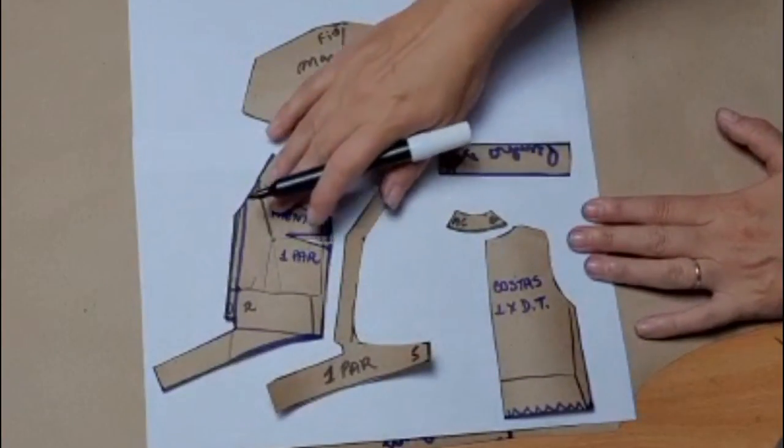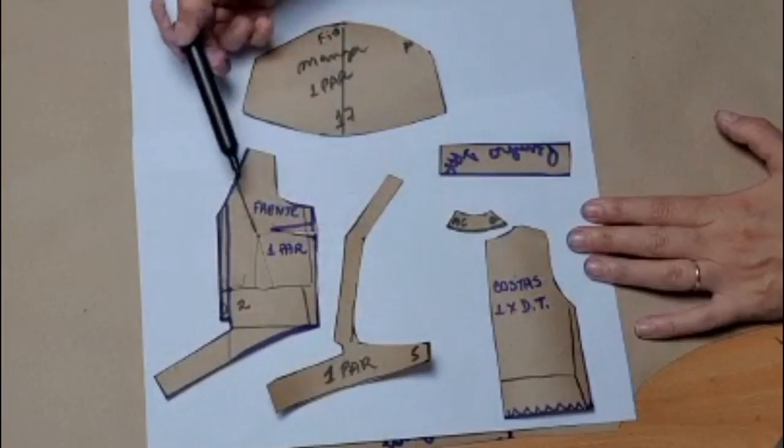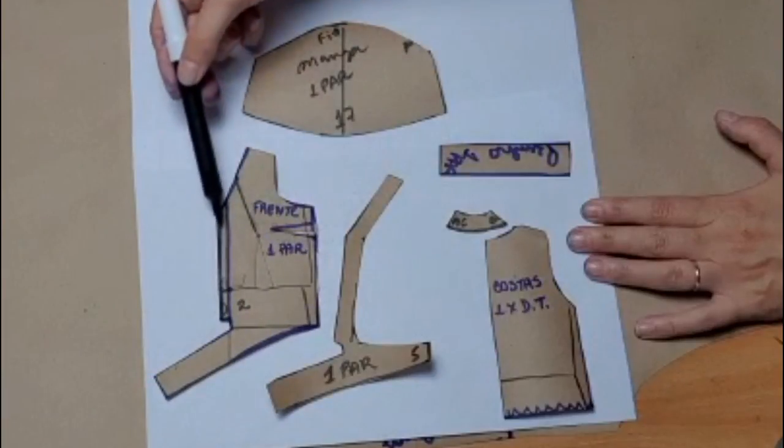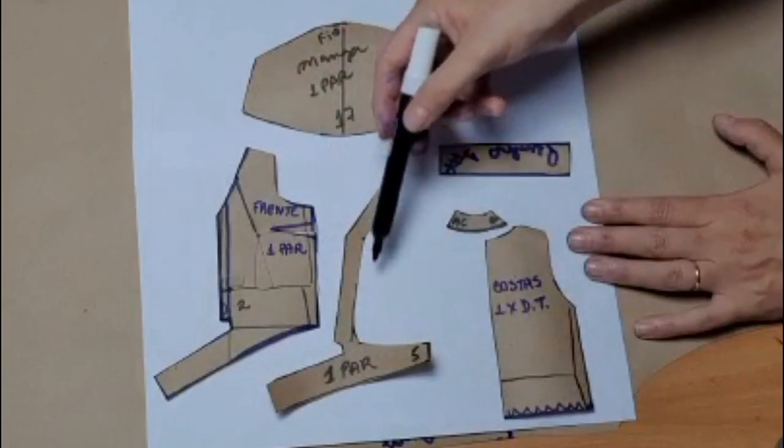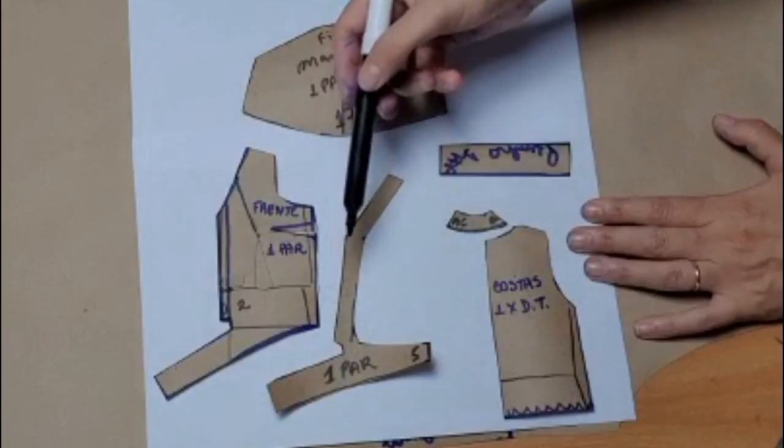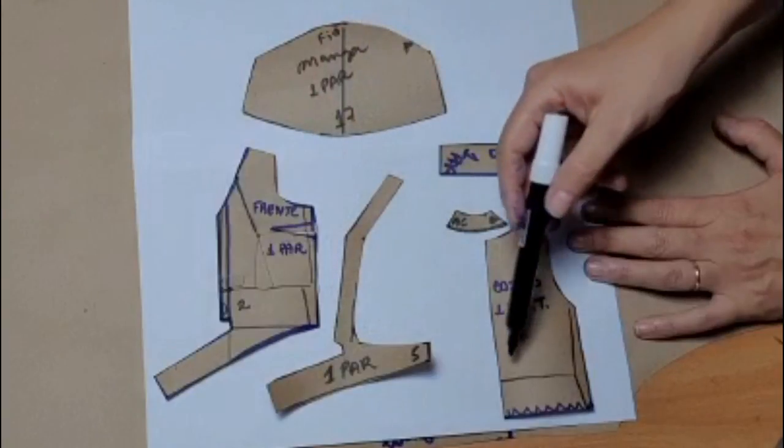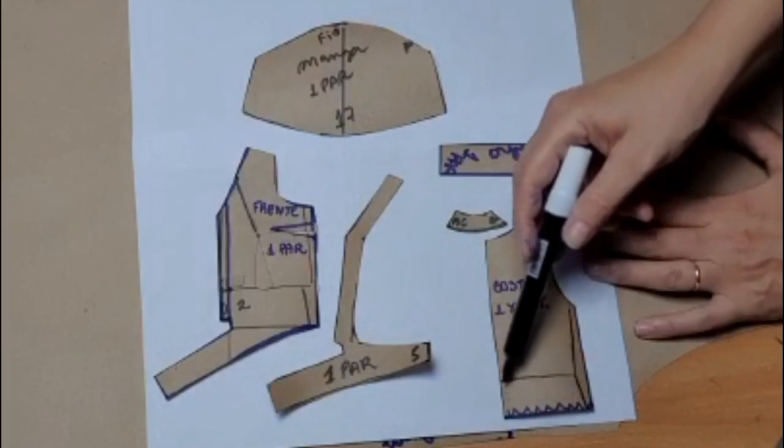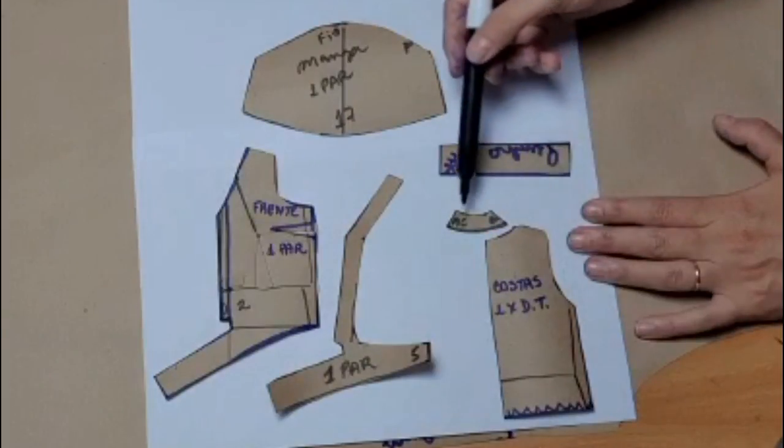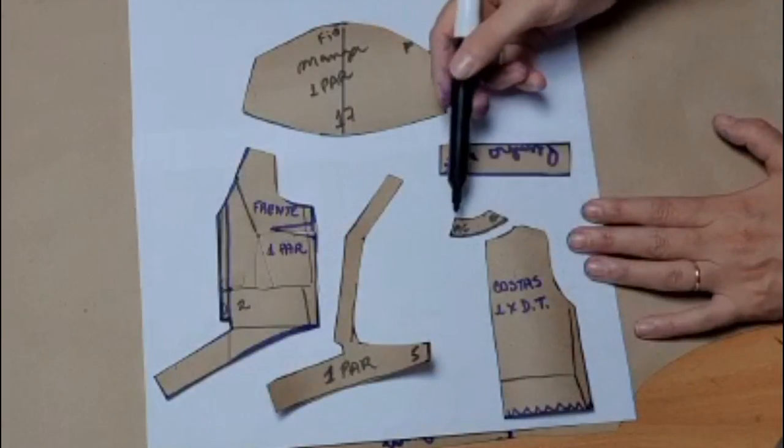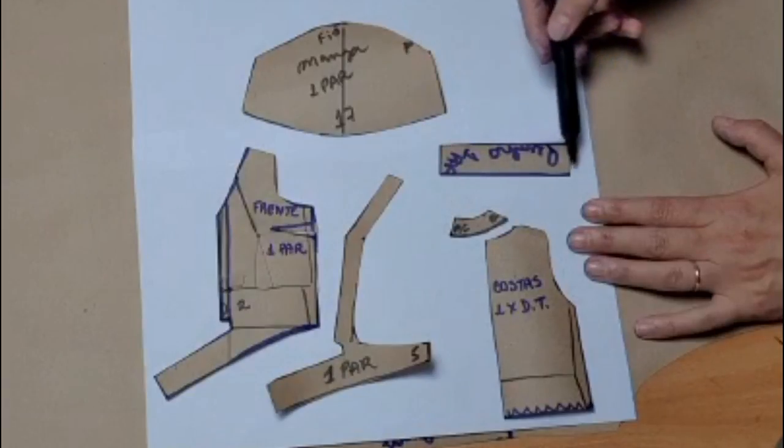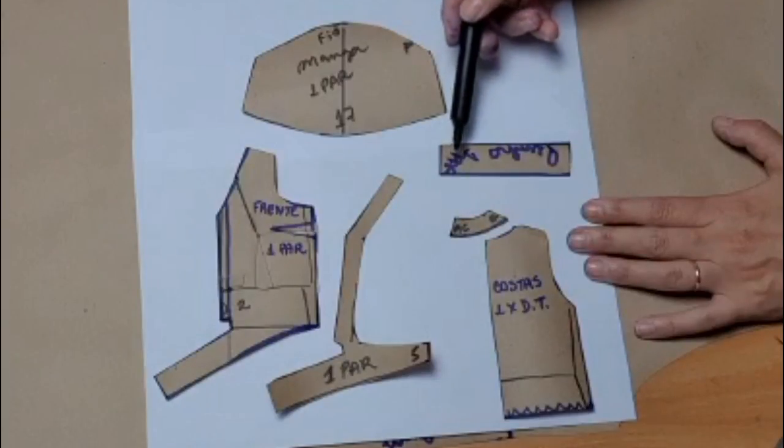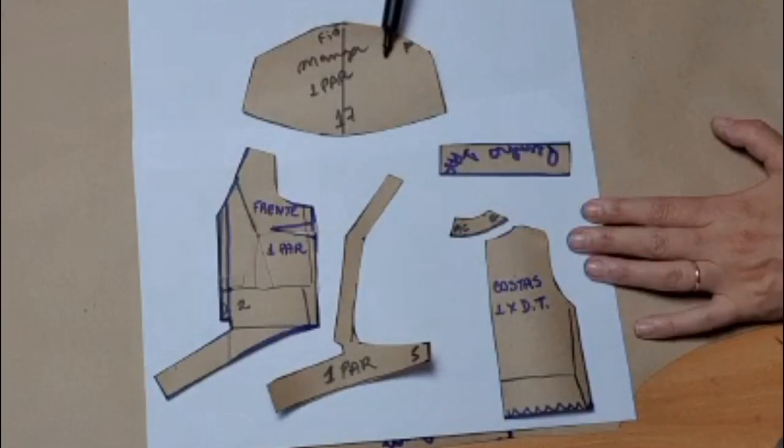The pattern making is all done. The front will be cut as a pair. The center front is the grain line. The facing will also be cut as a pair. The center front is the grain line. The back will be cut once on fabric fold. The back facing also once on fabric fold. The cuff I'll cut as a pair. The sleeve will also be cut as a pair, and this center line is the grain line. The pattern is ready.